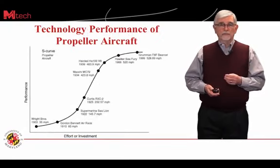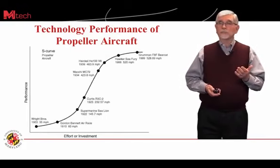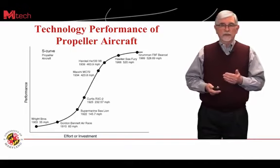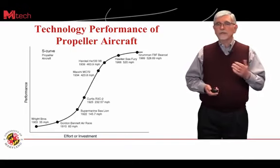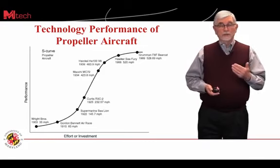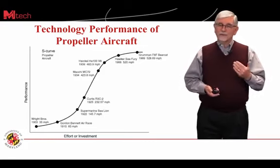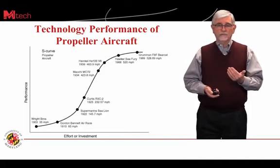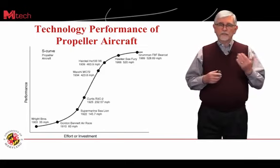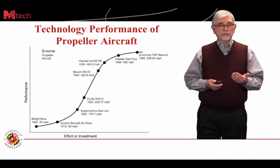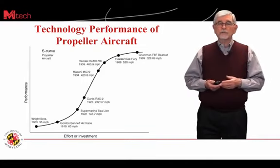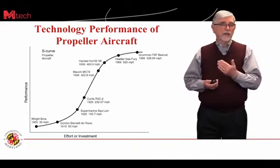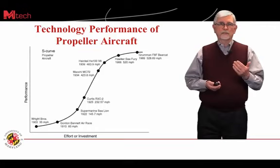We can look at an example using propeller aircraft. Down the lower left-hand side, the first aircraft was performing very low by comparison to now. The Wright brothers' first flight was about 35 miles an hour — pretty fast compared to walking, but a fairly low performance for a propeller aircraft. Over periods of time, the development of propeller aircraft increased in performance, reaching what we would call a natural limit of performance, beginning to flatten out at 529 miles an hour.